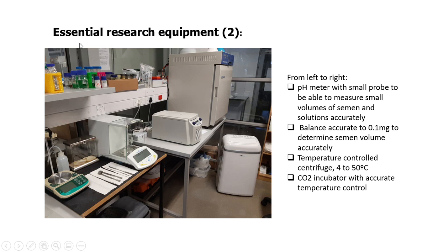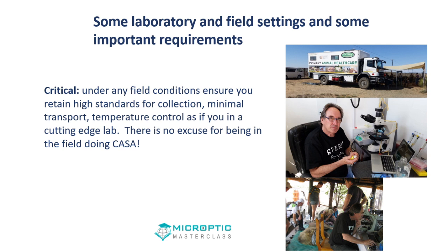More essential research equipment: it's good to have a very good pH meter with a small probe for measuring small volumes of semen and the media you make up. You also need a balance — not only for making up chemicals, but for actually determining sperm volume. We weigh the sperm sample because it's viscous and very difficult to determine from a volumetric point of view.